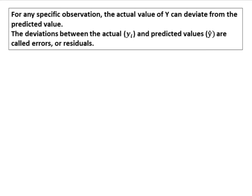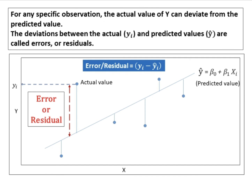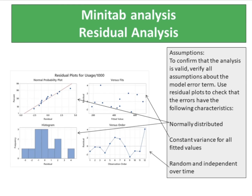What is a residual? For any specific observation, the actual value of Y can deviate from the predicted value. The deviations between the actual and predicted values are called errors, or residuals. To confirm that the analysis is valid, verify all assumptions about the model error term. Use residual plots to check that the errors are normally distributed, have constant variance for all fitted values, and are random and independent over time. Use the histogram of residuals to check for skewness or outliers. Use the normal plot of residuals to verify that residuals are normally distributed. Use the residuals versus fits plot to verify constant variance, and use the residuals versus order plot to verify that residuals are random and independent over time.